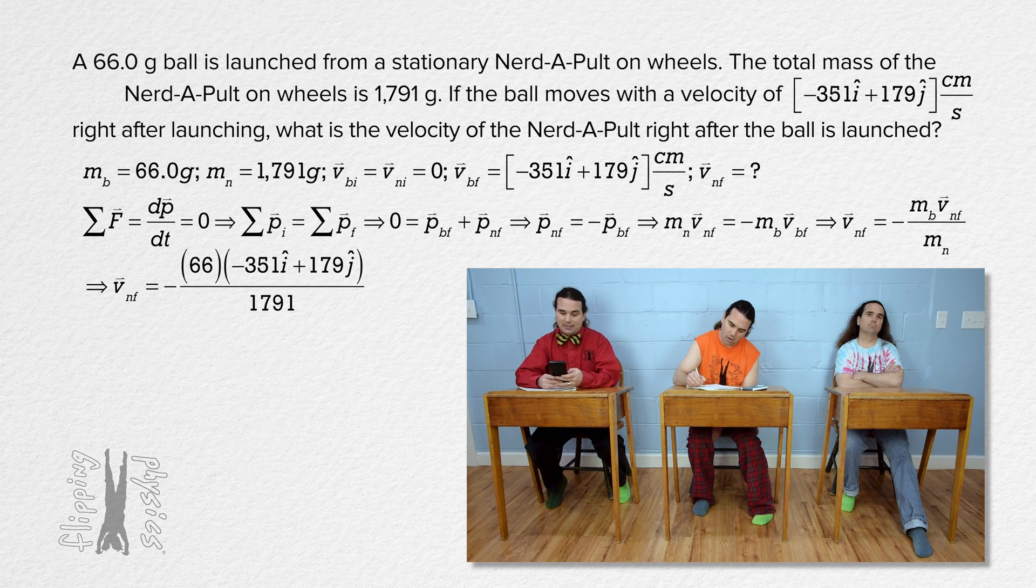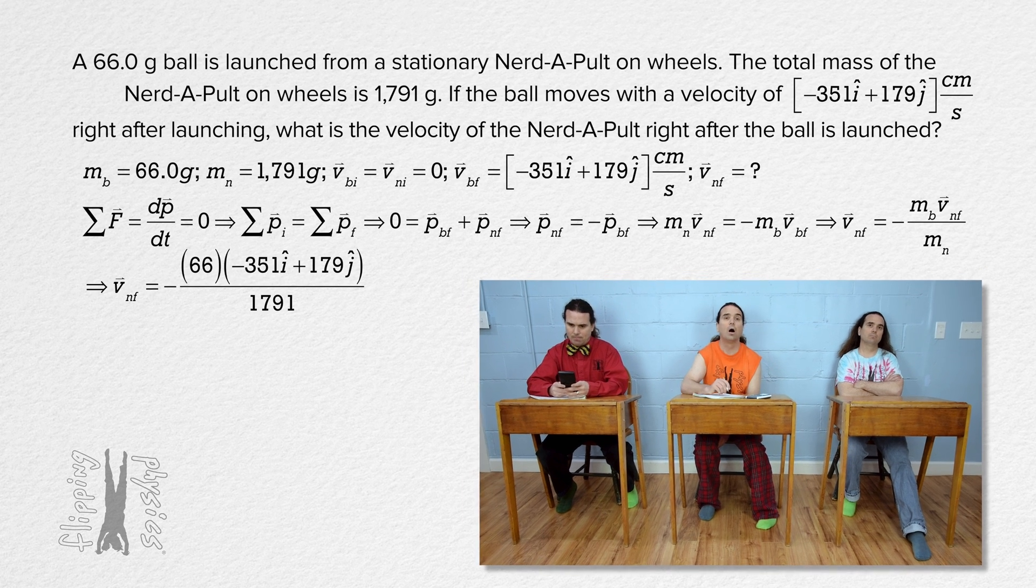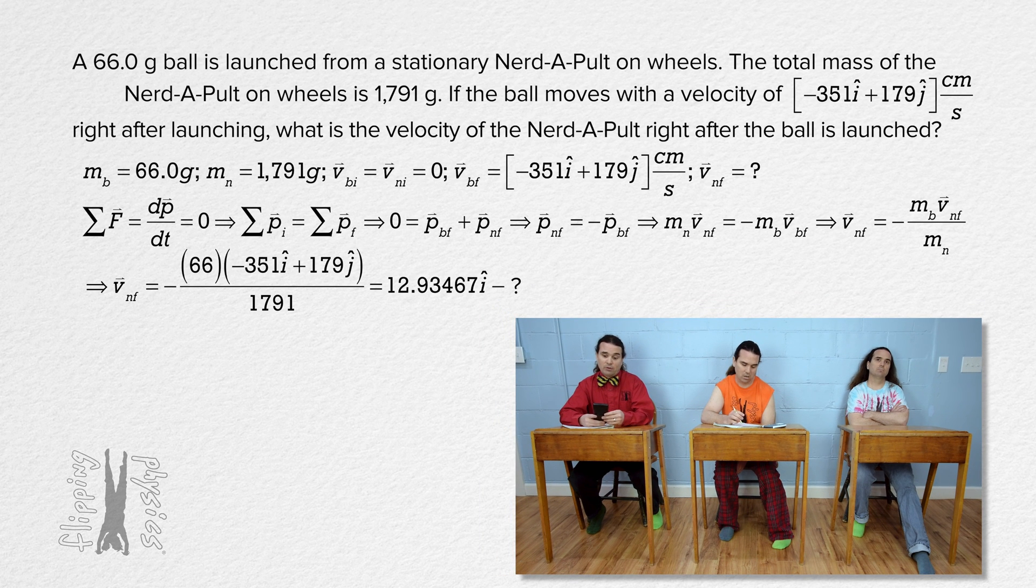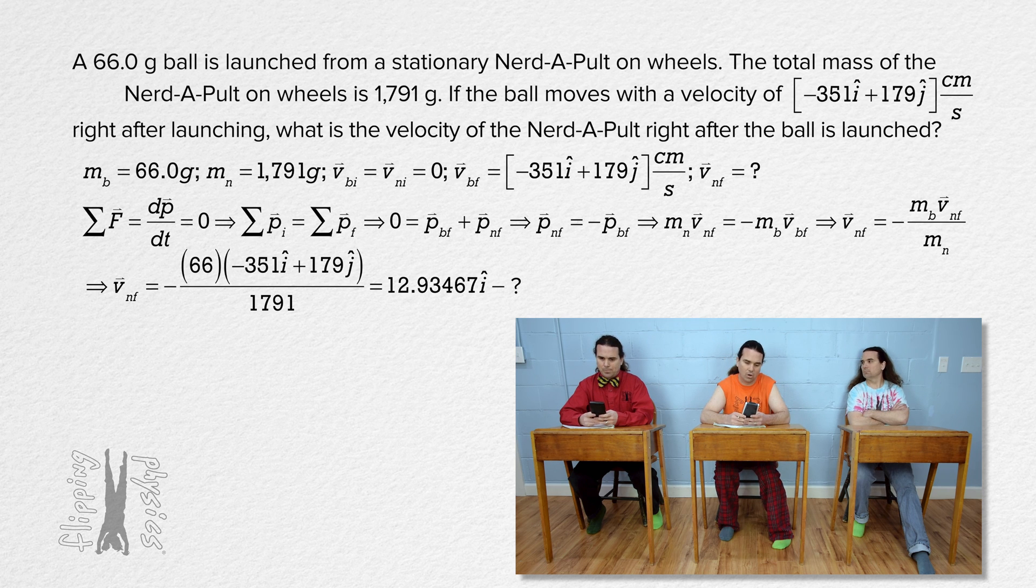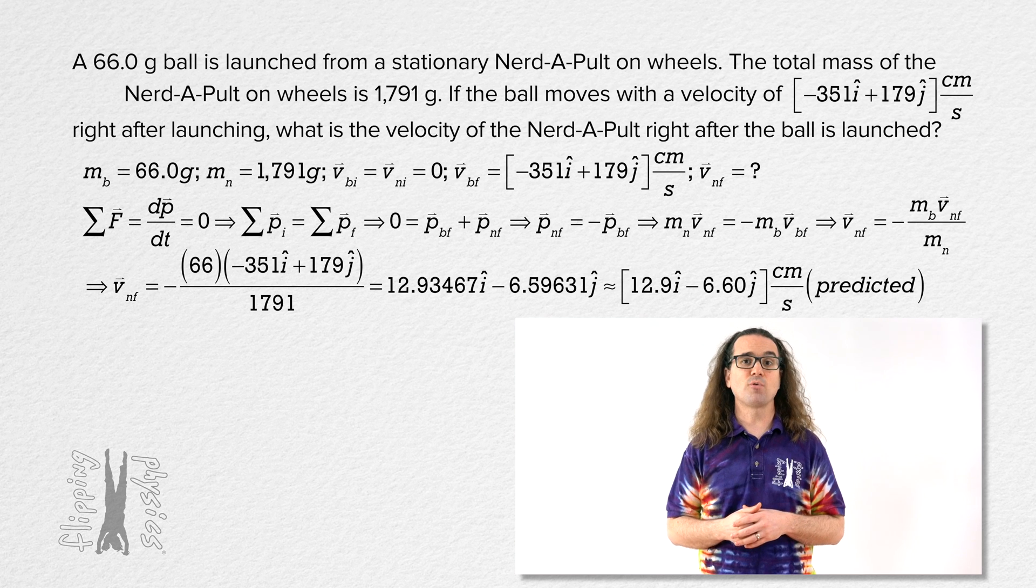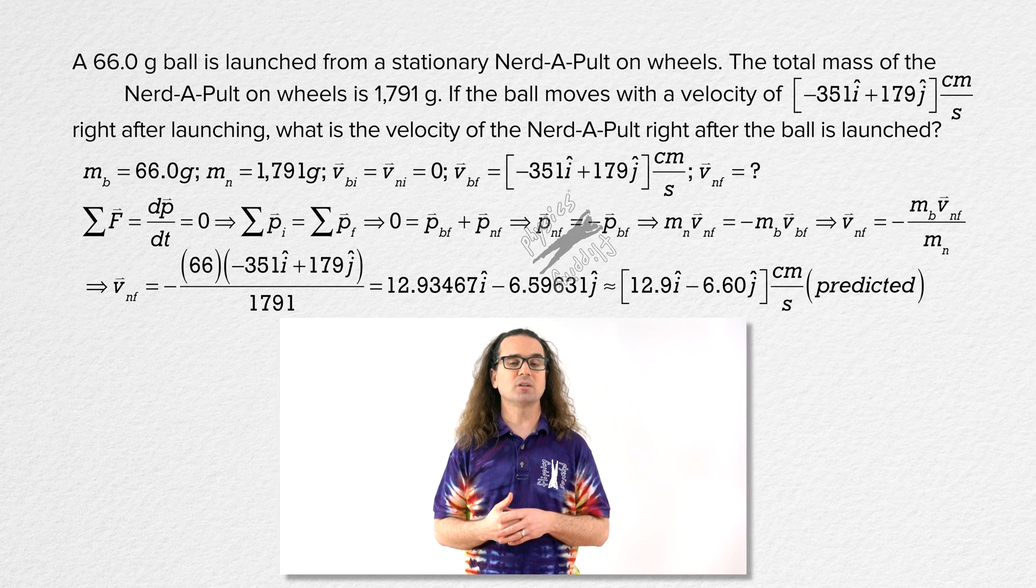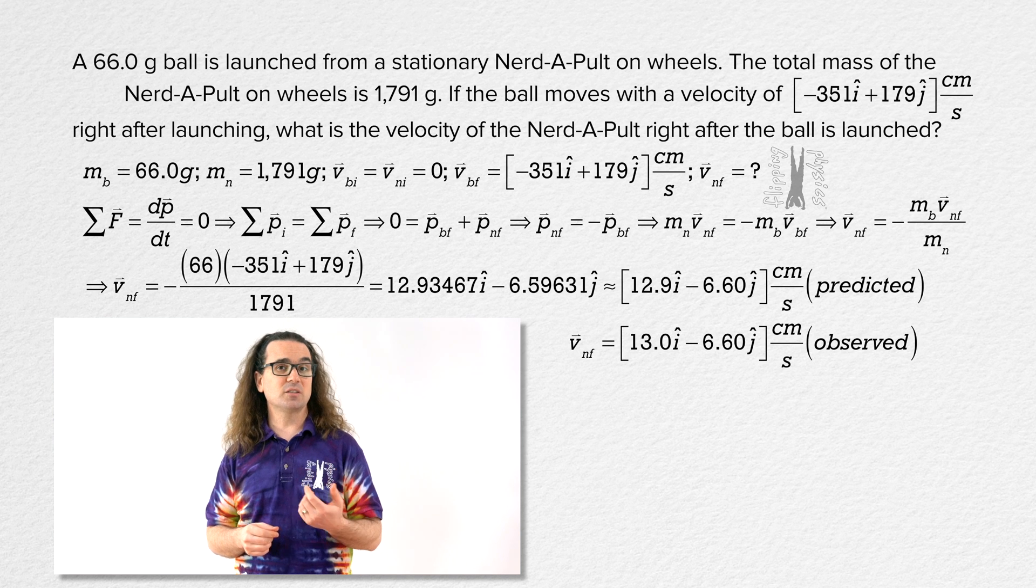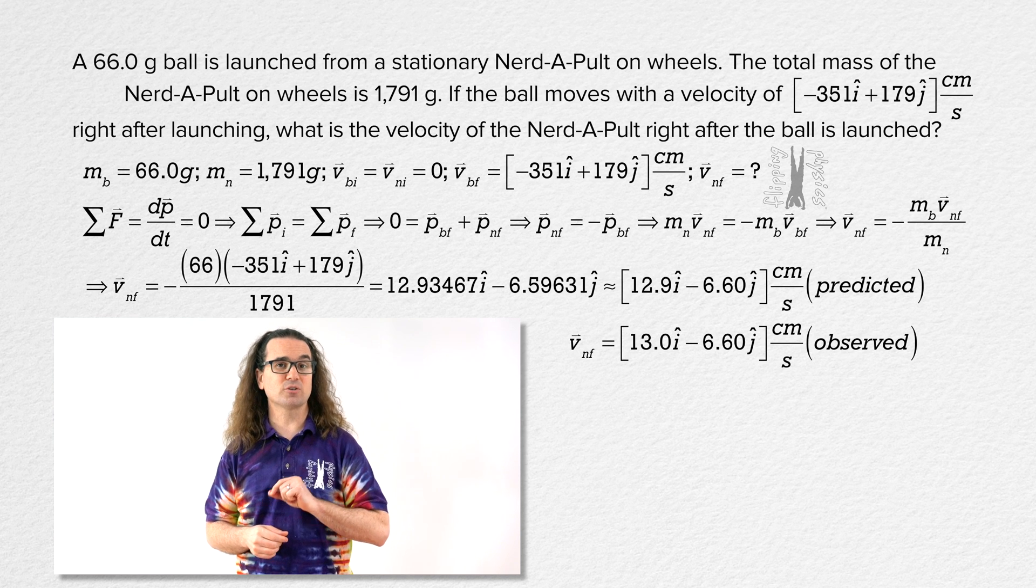We can plug in our numbers to get 12.93467i minus 6.59631j or, well, 12.9i minus 6.60j centimeters per second with 3 sig figs. Very nice, Billy.